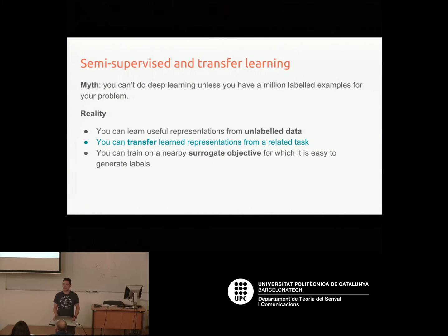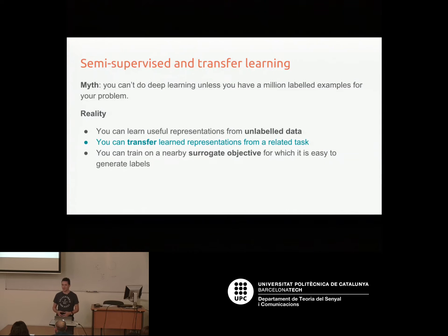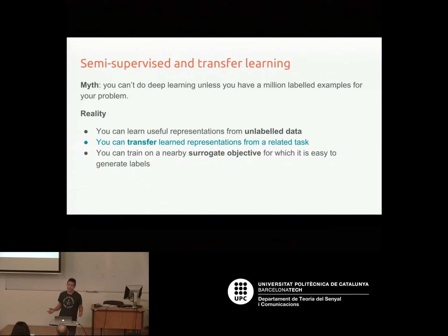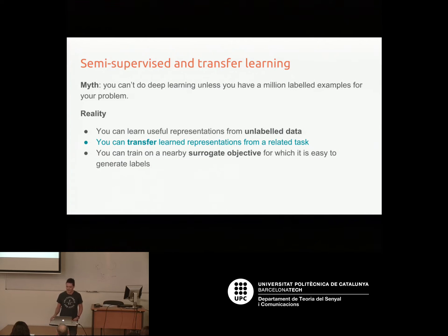One of the things you might hear people saying is that our problem is too small in terms of how much data we have. We can't use deep learning because we only have 20 classes and 100 examples per class, and you need millions and millions of examples to do deep learning. That's simply wrong — you can totally use deep learning even when you only have a small number of training examples.